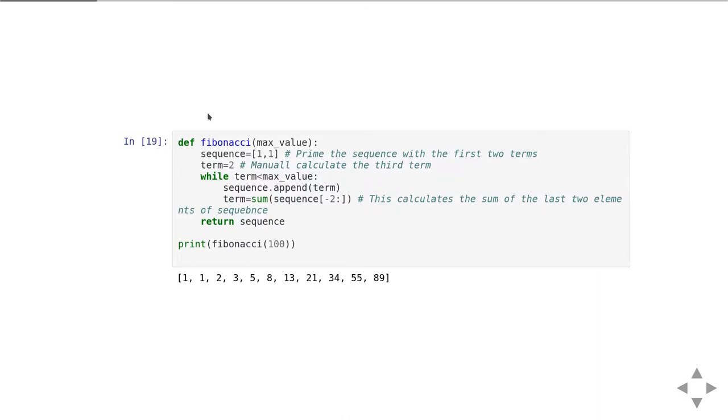To write a function which can calculate the Fibonacci sequence we might do something like this. We have a function called Fibonacci. It takes a single parameter which is going to be the maximum value that we're going to go up to. Then we'll start off by defining a list which is going to hold the sequence and we initialize it with the first two terms which is just 1, 1.